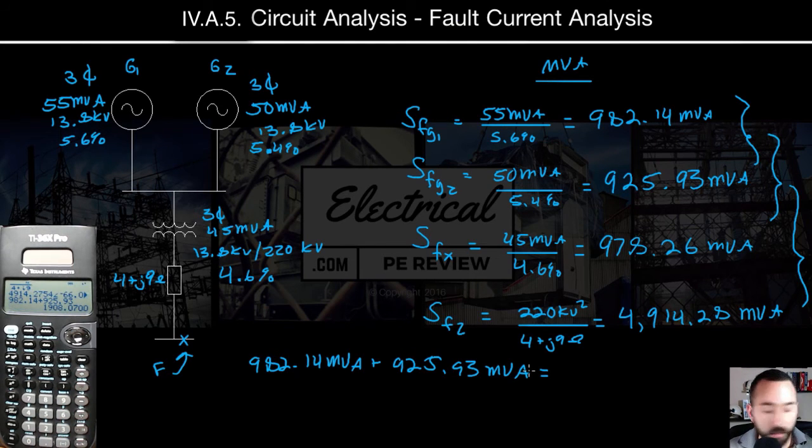Okay, that's 1908.7. So I'm going to just go ahead and write it down here. Give us more room. 1908.7 MVA. Okay, now we're going to use the reciprocating sum method with the transformer value.